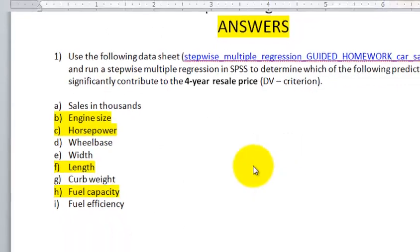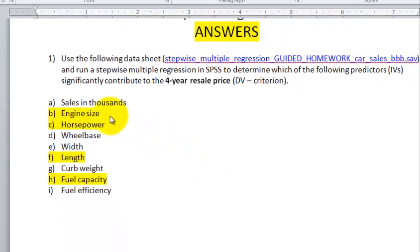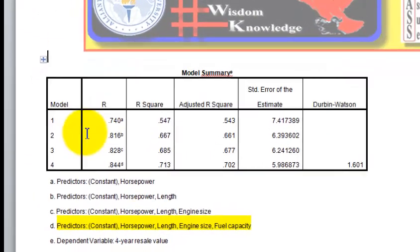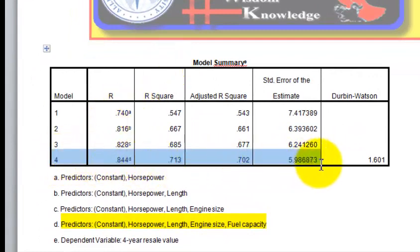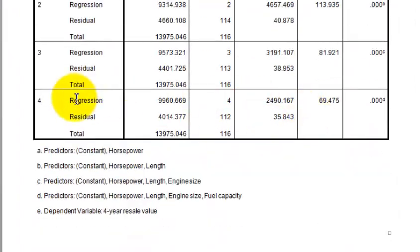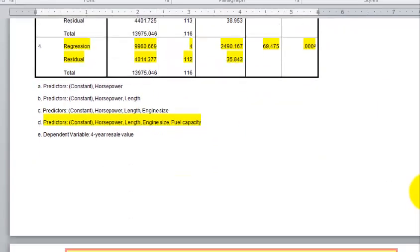And again, the ANOVA for the four is significant. So here are our four significant predictors. Engine size, horsepower, length, and fuel capacity. From the SPSS output sheet, we could have used this one, the fourth row here. Gives us an R squared of .713, which is large. Here's our ANOVA table just for the fourth one. Let me highlight this here. This one is significant. And those are the four predictors that are significant according to the stepwise. So that answers that question.